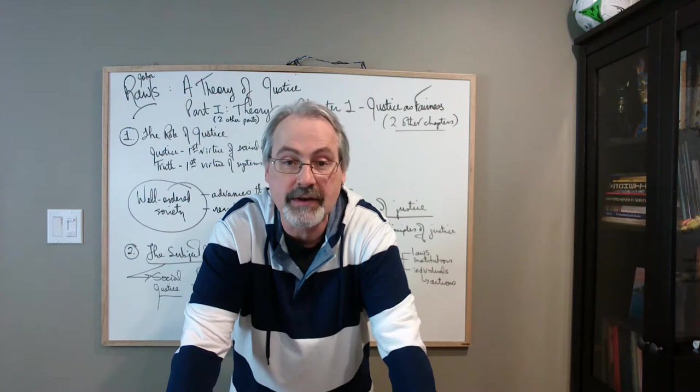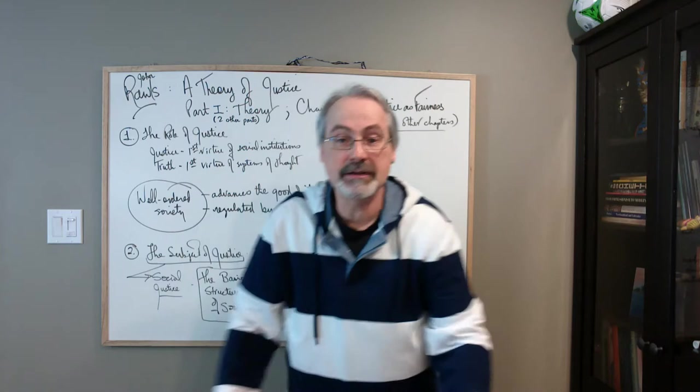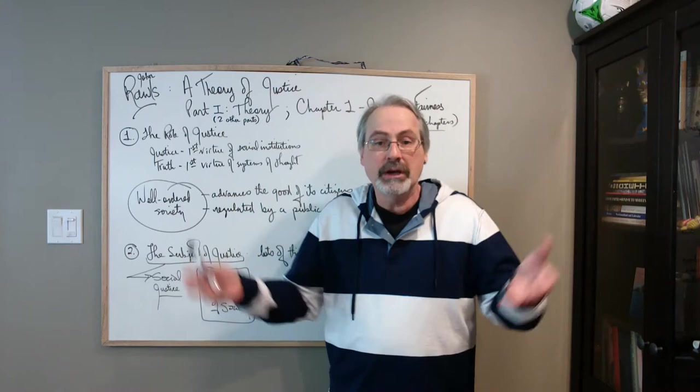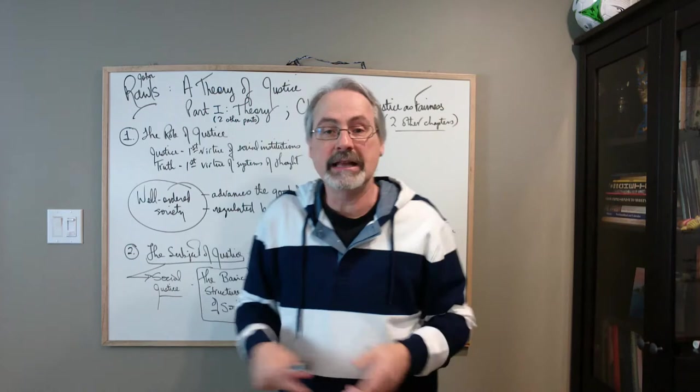And Rawls also lays down some definitions of society. He calls it a cooperative adventure for mutual advantage. So there are advantages for us to get together and work together. And the question is, how do you parcel out? How do you share those advantages? Because when people get together and there are work economies of scale and advantages accrue to the group, how do you parcel those advantages back out?